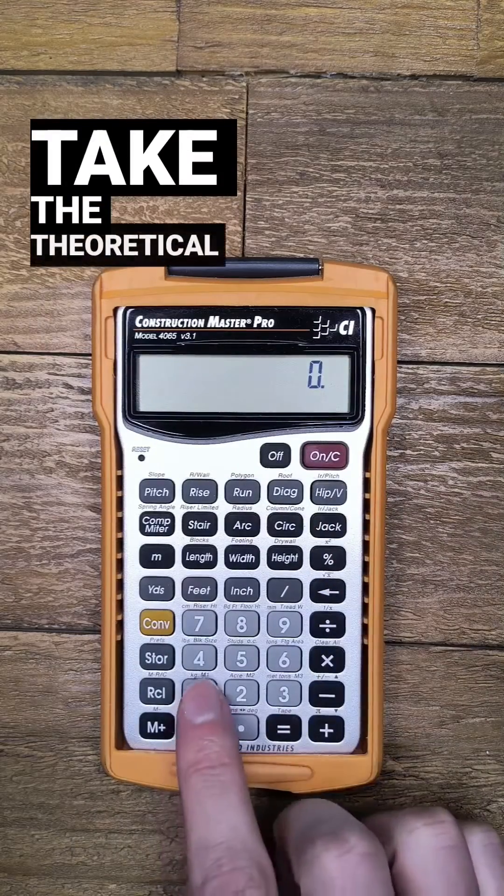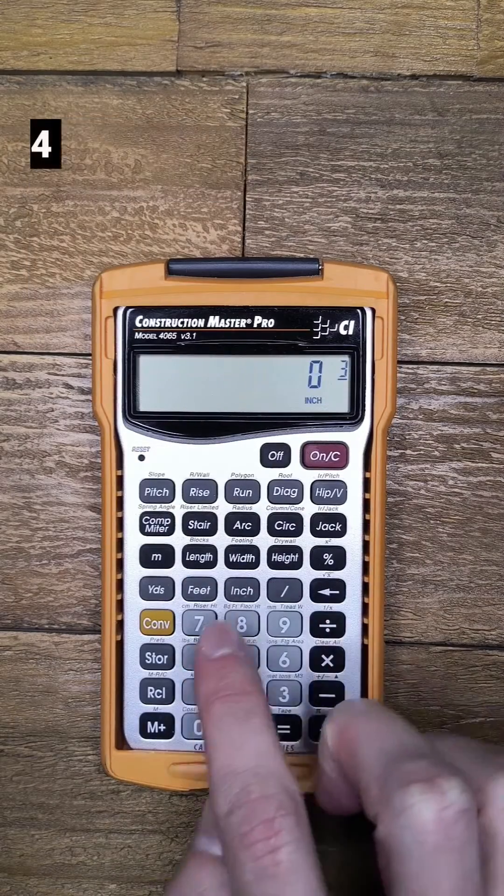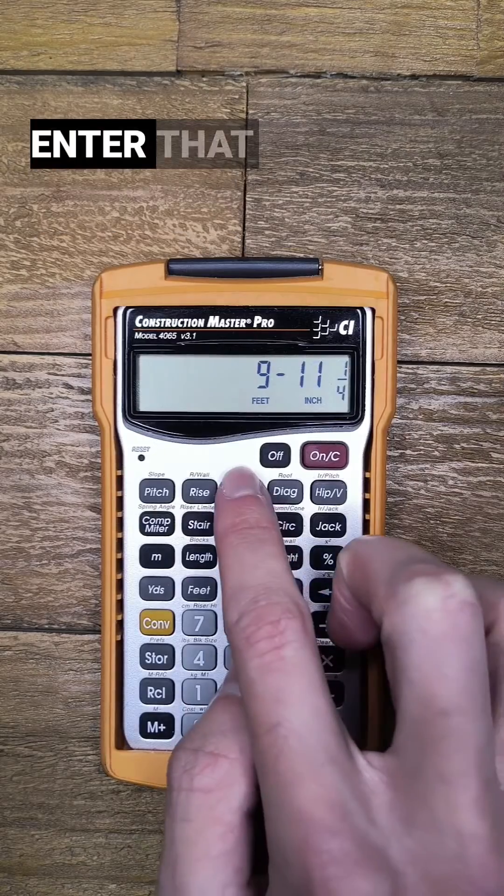The second mistake is to take the theoretical run of the common rafter, deduct half the thickness of the ridge, so minus 3 quarters of an inch for 2x stock, and enter that as run.